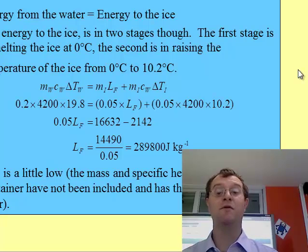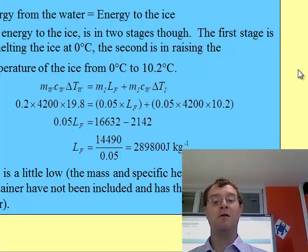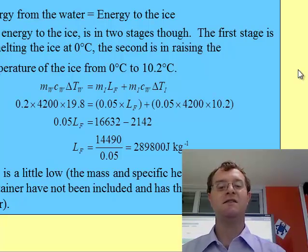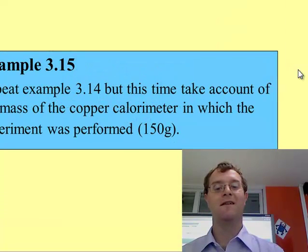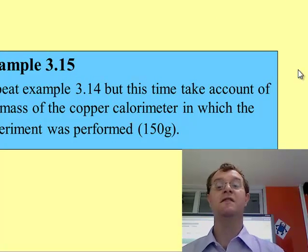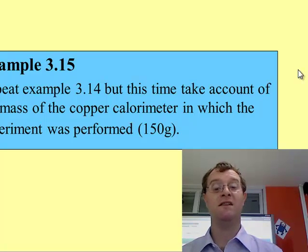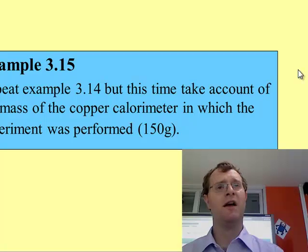This value, as it happens with lots of practical experiments, is probably a little low just because the heat capacity of the container has not been included, and there may be some other heat loss as well. So this time, the same question but using the mass of the copper calorimeter and taking that into consideration as well. The same calculation but a little more accurate and taking more things into consideration.